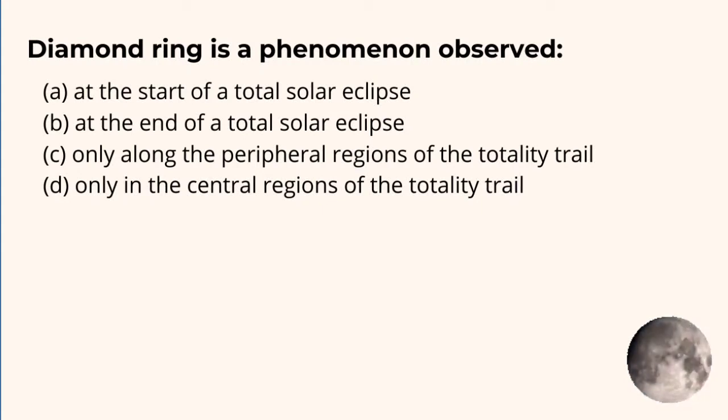Diamond ring is a phenomenon observed: (a) at the start of a total solar eclipse, (b) at the end of a total solar eclipse, (c) only along the peripheral regions of the totality trail, (d) only in the central regions of the totality trail.